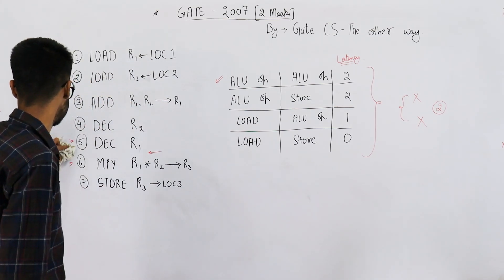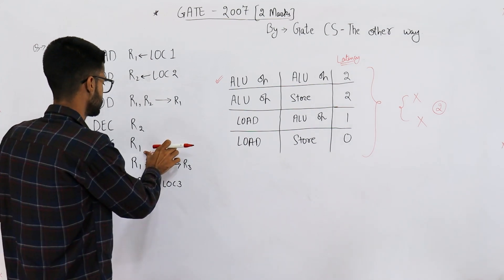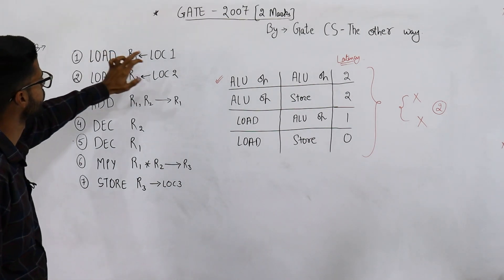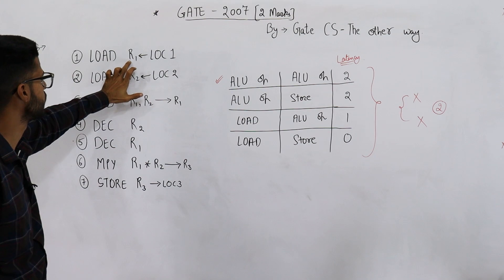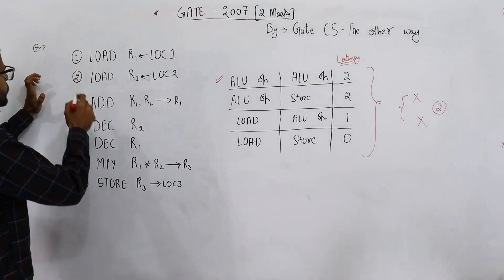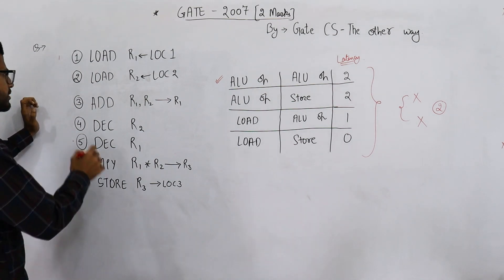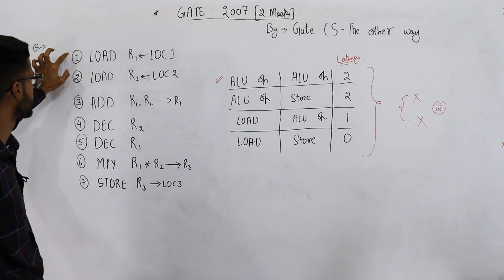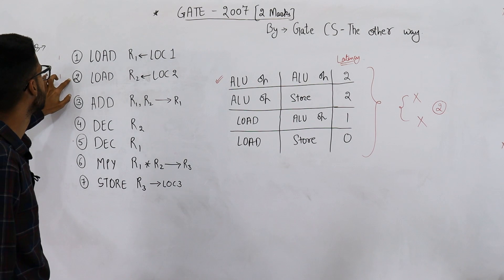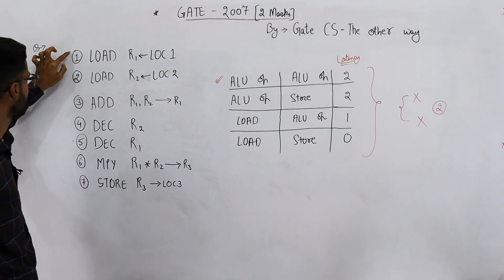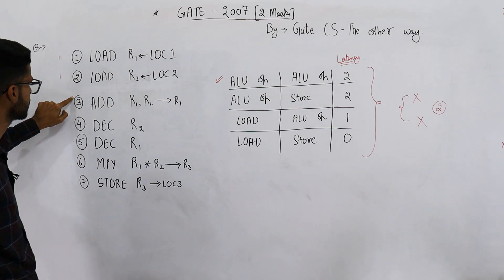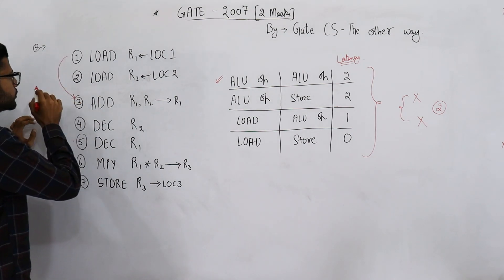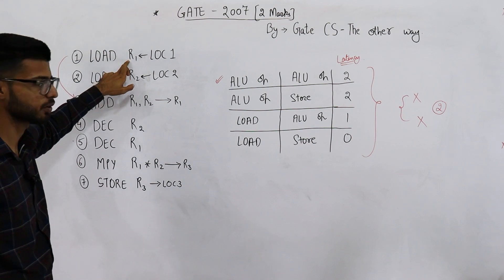The first instruction is a load — we are loading a value from location one into register R1. This takes one clock cycle. The second instruction also takes one clock cycle. There is no dependency between instruction one and instruction two. Now looking at instructions one and three: instruction one says load R1, and instruction three says add R1 comma R2.